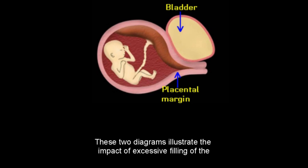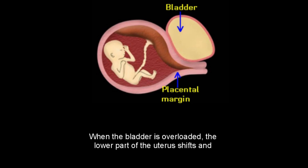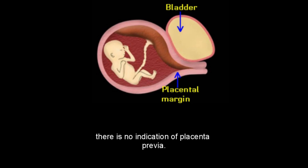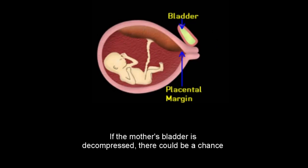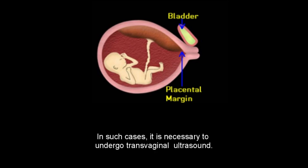These two diagrams illustrate the impact of excessive filling of the mother's bladder on the likelihood of posterior placenta previa. When the bladder is overloaded, the lower part of the uterus shifts and there is no indication of placenta previa. If the mother's bladder is decompressed, there could be a chance of having a posterior placenta previa, and in such cases it is necessary to undergo transvaginal ultrasound.